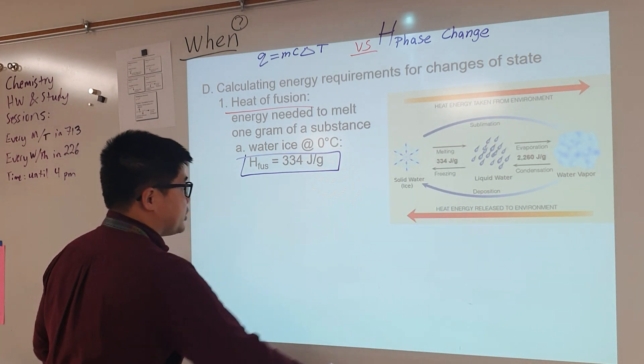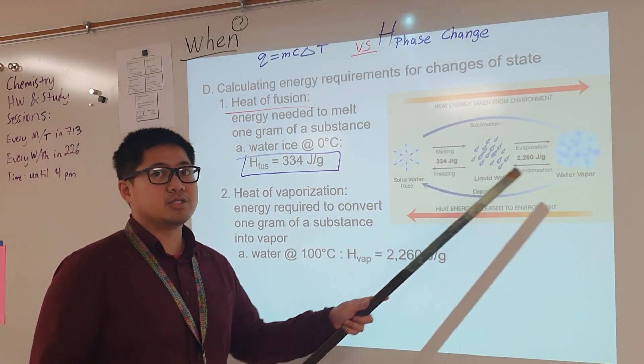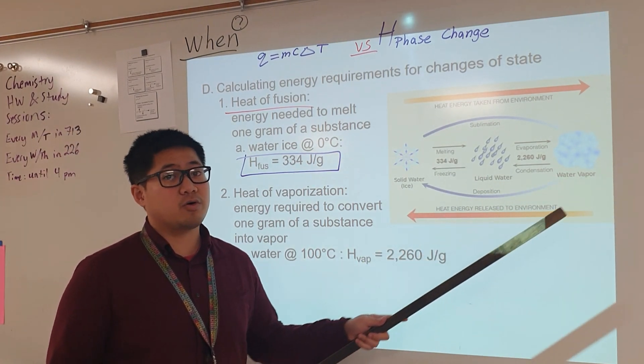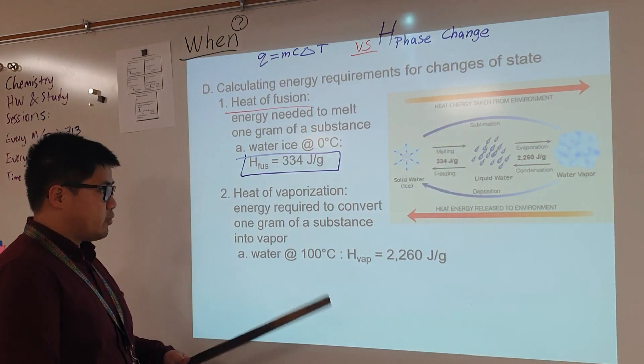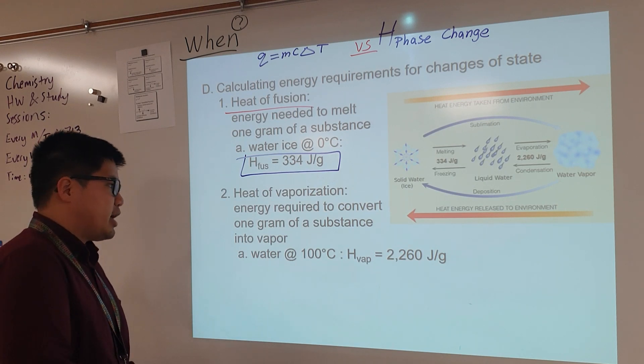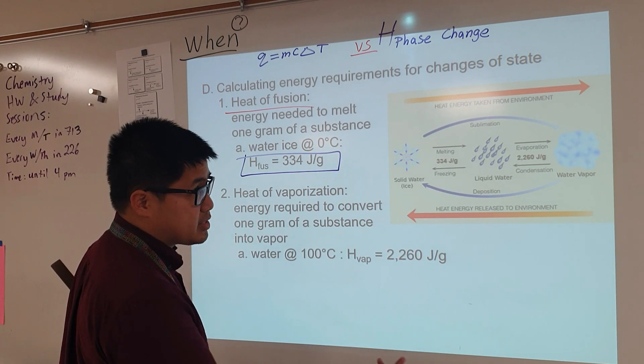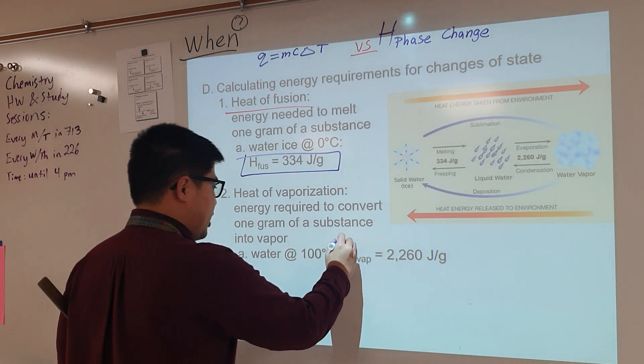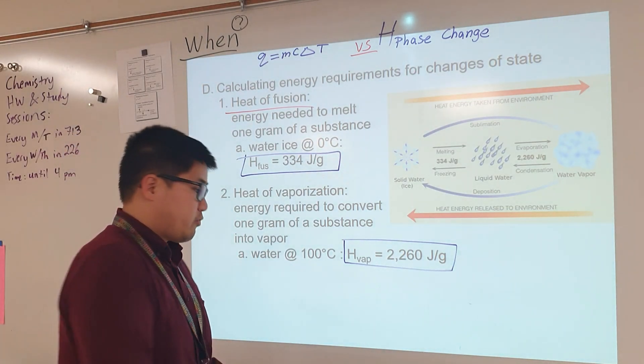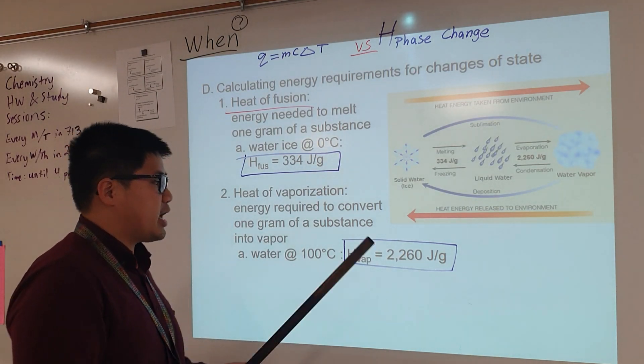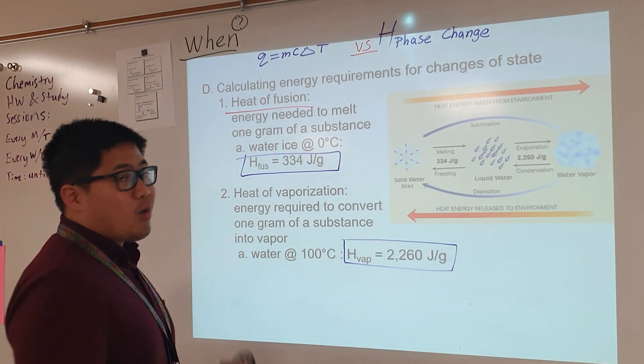When it comes to the other states of matter, from liquid to gas or backwards from gas to liquid, we have a different value. Through experimental data, we figured out that in order for liquid water to transition to gaseous or the other way around, the heat to vaporize water is 2260 joules per gram.